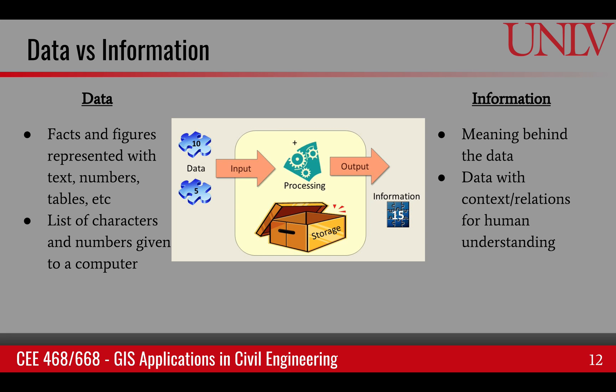Once the computer processes this information and generates new data, and once this data has a context associated with it, it becomes information. Information is the meaning behind the data — it is data with context or relations for human understanding.